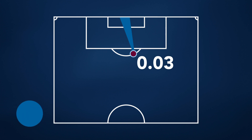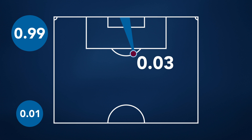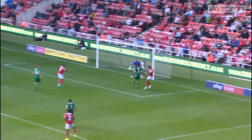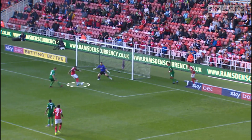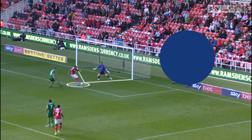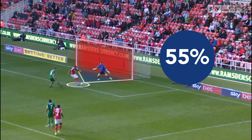Chances are ranked between 0.01 and 0.99, from highly unlikely to ever score, to highly unlikely to ever miss. For example, here's Brita Sombolonga bearing down on goal. We give him a 55% chance of scoring from here, an XG value of 0.55.